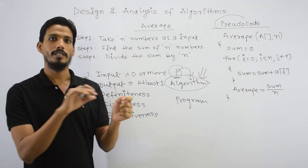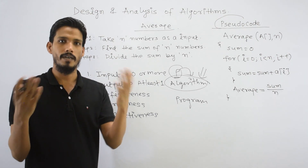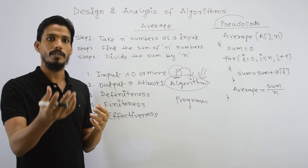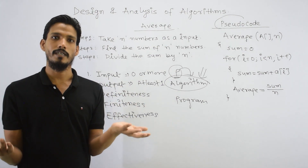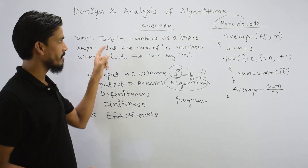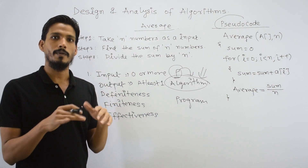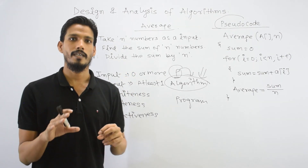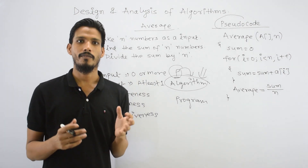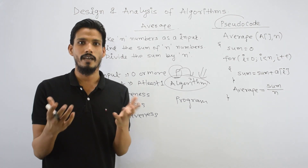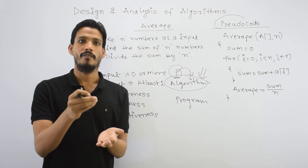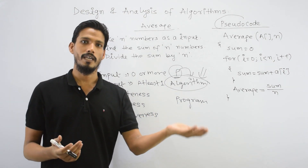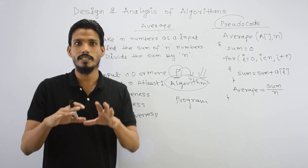Unambiguous means there should be no multiple meanings in any statement. For example, 'Take N numbers as input' is crystal clear — you can have 10, 15, 100 numbers. 'Find the sum of N numbers' — that means everyone should add. 'Divide sum by N' — no ambiguity. In contrast, a recipe that says 'swad anusar' (to taste) is an ambiguous word. If you need to add 50 grams, you say exactly 50 grams. Statements with multiple meanings — like 'to taste' — should not be written in an algorithm.